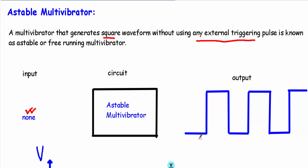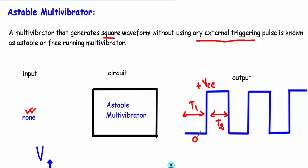This square waveform will have two levels: zero level and plus VCC level. For T1 time interval it will be at zero level, and for T2 time interval it will be at plus VCC level. If I represent these with binary values, zero represents logic zero and plus VCC represents logic one.